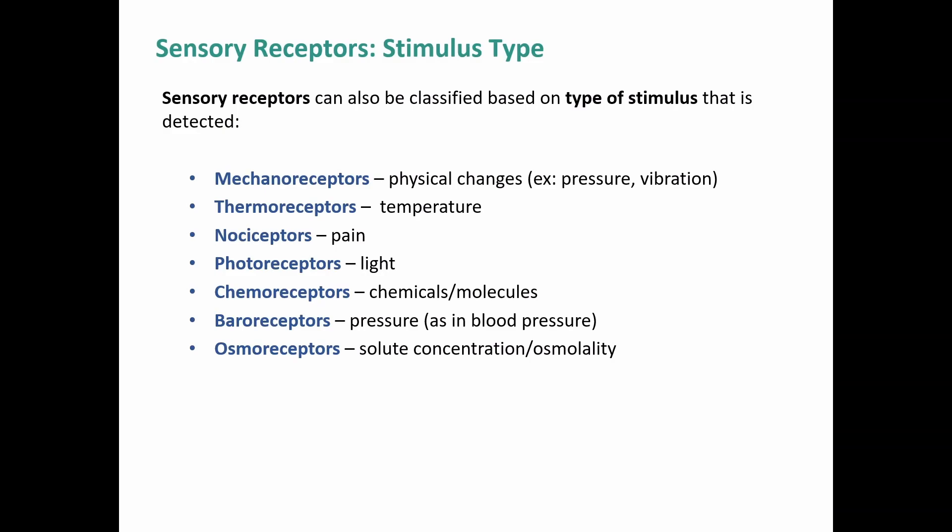We can also classify sensory receptors based on the type of stimulus: mechanoreceptors, thermoreceptors, nociceptors, photoreceptors, chemoreceptors, baroreceptors, and osmoreceptors. Mechanoreceptors detect mechanical or physical changes like pressure or vibration. Thermoreceptors detect temperature. Nociceptors detect pain. Photoreceptors detect light. Chemoreceptors detect chemicals or specific molecules. Baroreceptors detect internal pressure like blood pressure, distinct from mechanoreceptors which handle external pressure. Osmoreceptors detect changes in solute concentration or osmolality.